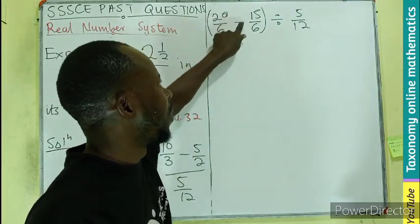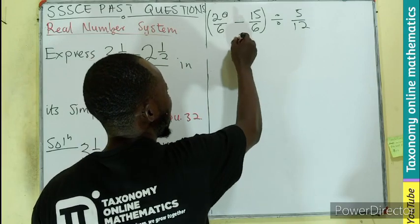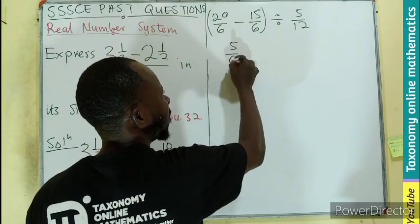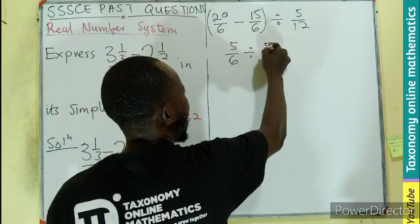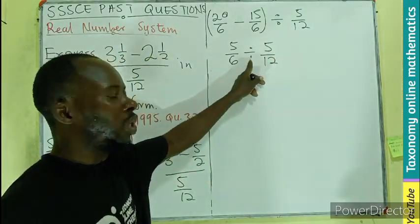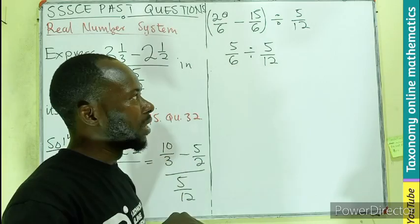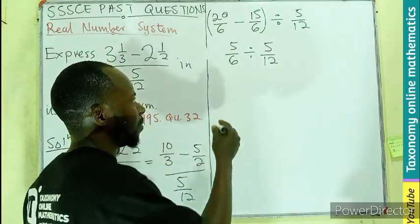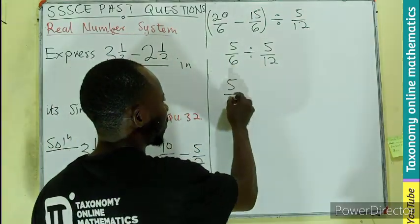Then we know for division of fractions, we change the division into multiplication and we flip the second fraction. Meaning 5 over 6 times, flipping this becomes 12 over 5, and you can see 5 and 5 will cancel, 6 will go here 1 and go here 2.